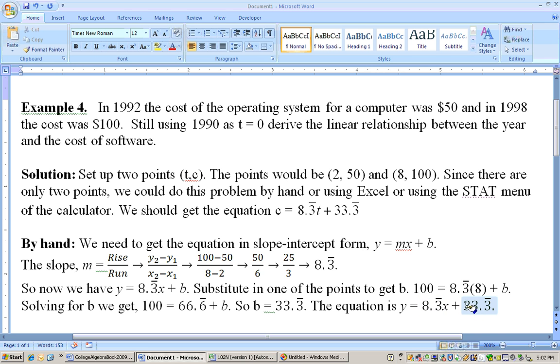The y-intercept is the point 0 comma 33.3 repeating. So 0 tells me the year, which is 1990. Back in 1990, according to this model, the cost of an operating system was $33.33.